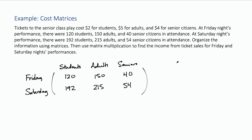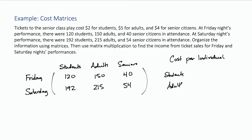Then we've got our cost matrix — a cost per individual matrix. Again, we've got our three types of individuals: students, adults, and seniors.